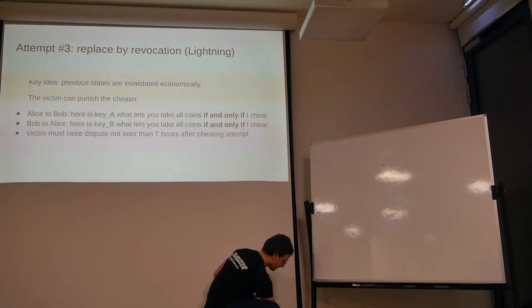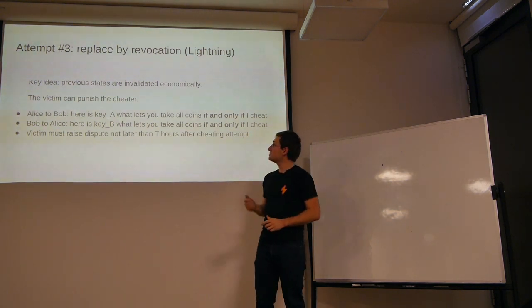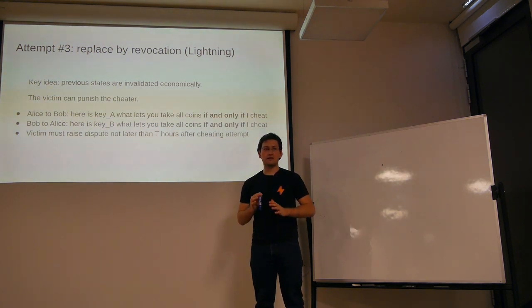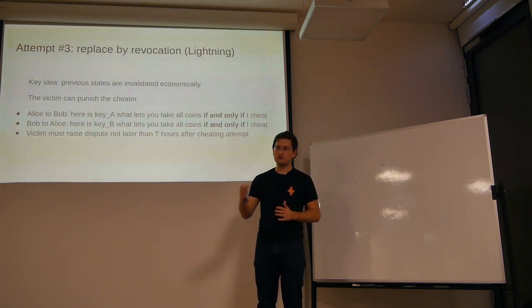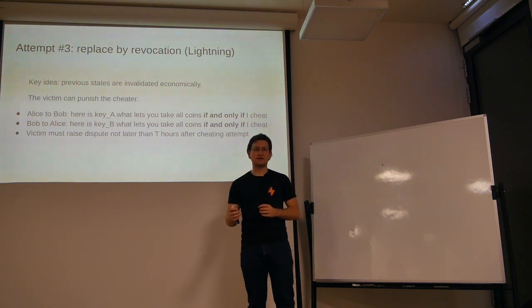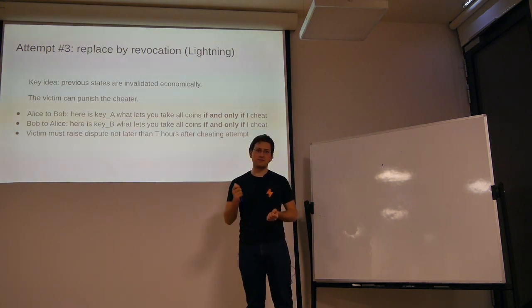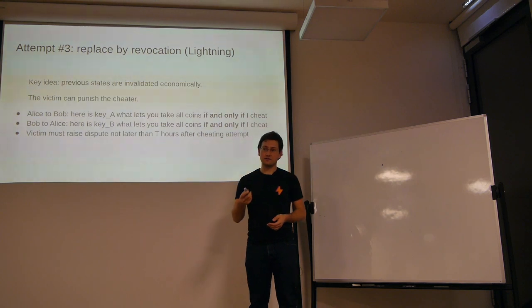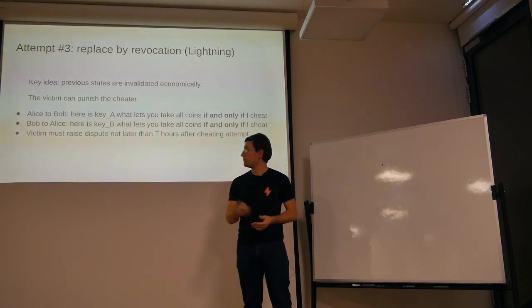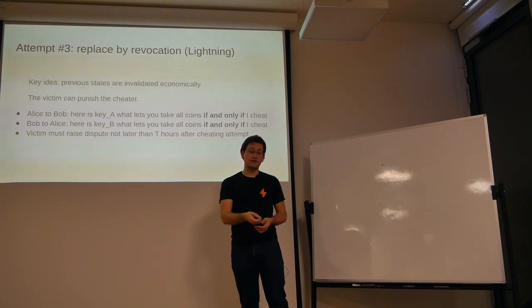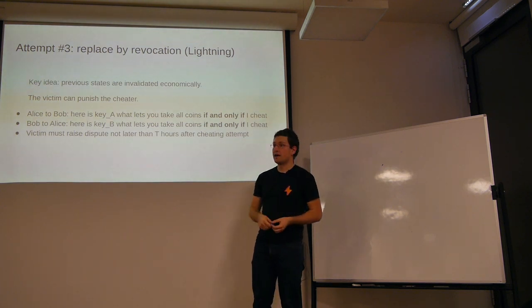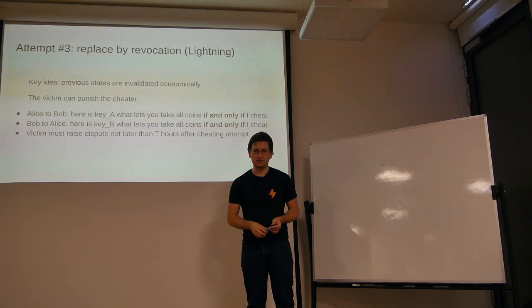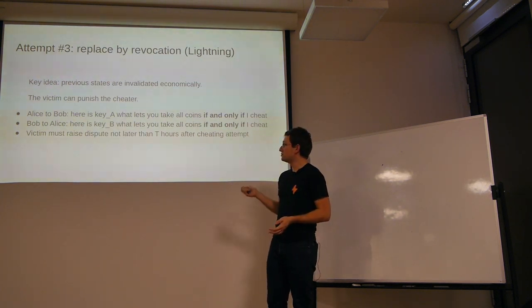The key idea behind Lightning is a state replacement technique called replace by revocation. The general mechanics is that when Alice and Bob are updating to a new state, they exchange some secret information that lets them punish each other in case the other party cheats. Alice says to Bob: here's the secret key — in case I try to cheat you, you will be able to take all my money. And Bob says to Alice: if I try to cheat, you can use this key and take all my money. Then they update to the next state, and both are sure that they are not incentivized to cheat, because otherwise they will lose the money in the channel.